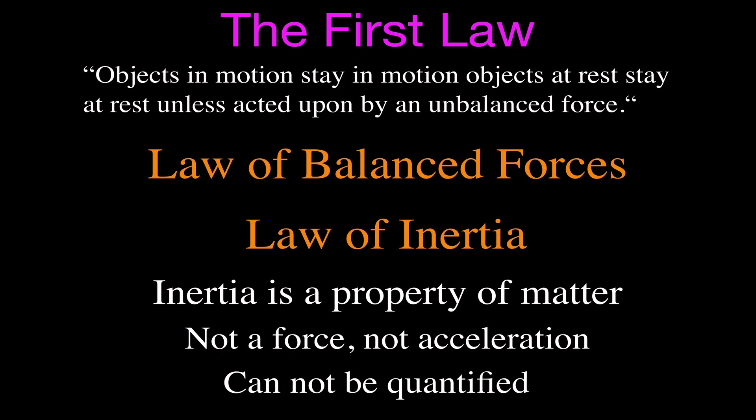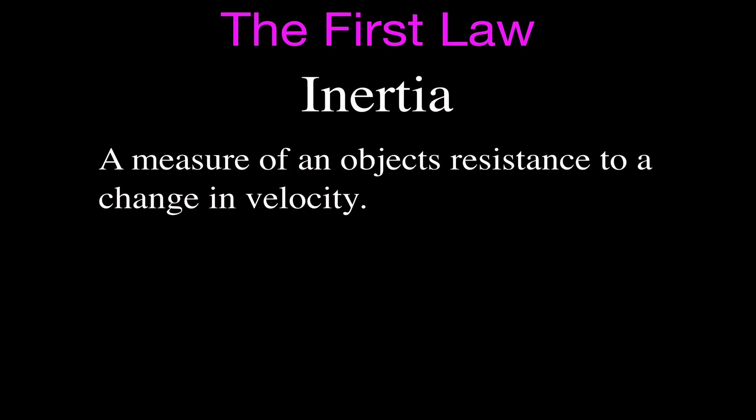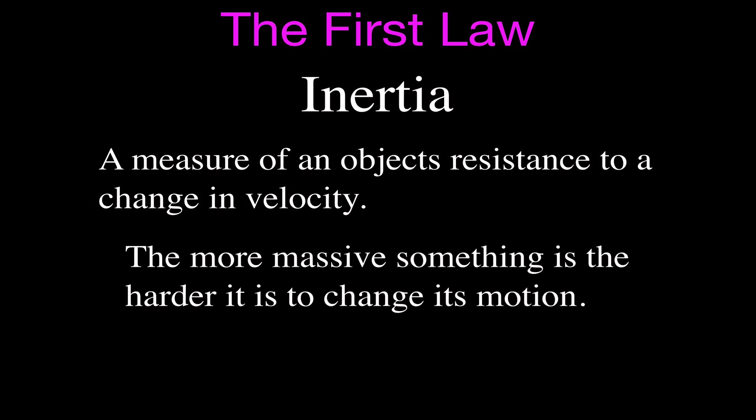It's a little confusing sometimes because you really can't quantify inertia. You can't say something has so many units of inertia. It's just something that is related to an object's mass. Inertia officially is a measure of an object's resistance to change in motion or a change in velocity. Objects that resist or have a high resistance to a change in velocity are objects that are more massive. The more mass an object has, the harder it is to change its motion.